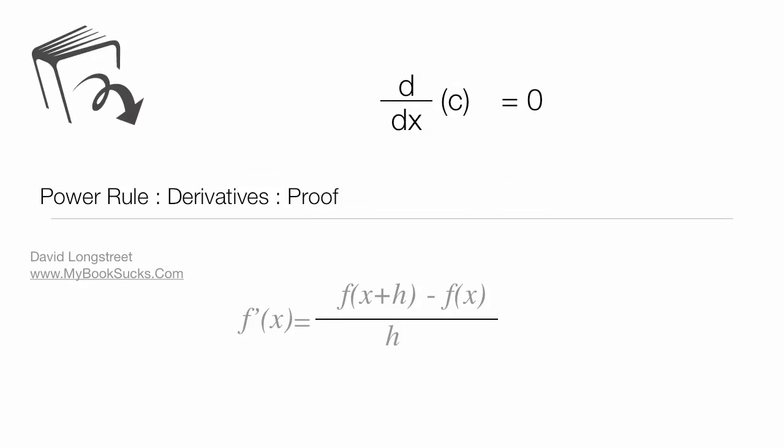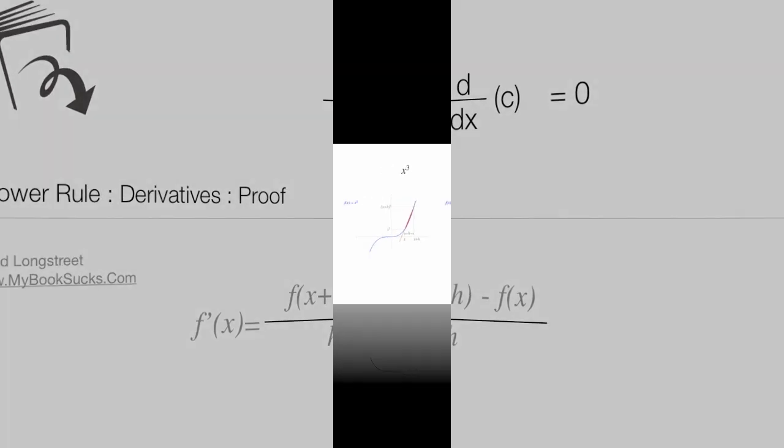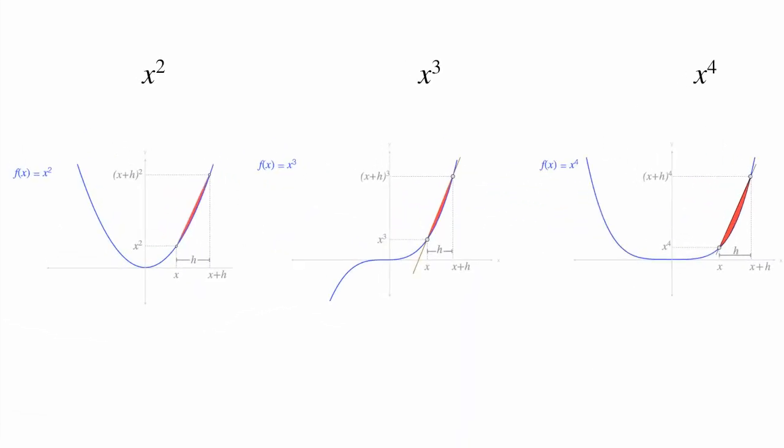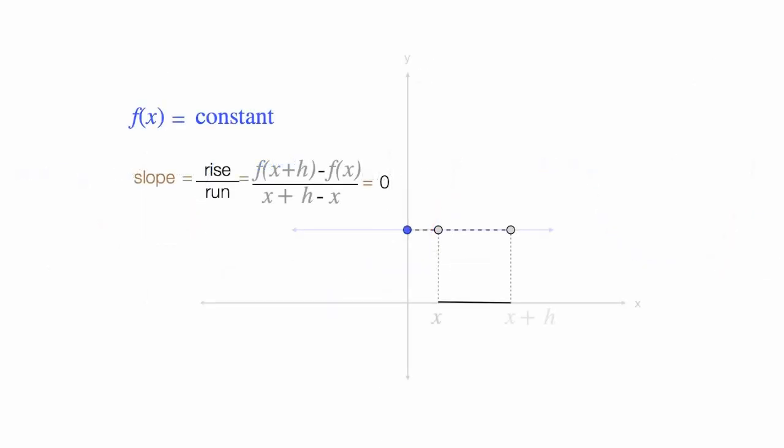In this video, I'm going to show you that the derivative of a constant is zero. I have several videos on the proof of the power rule, and you'll find links below. This is what the final product looks like, and I'm going to walk you through this step by step.